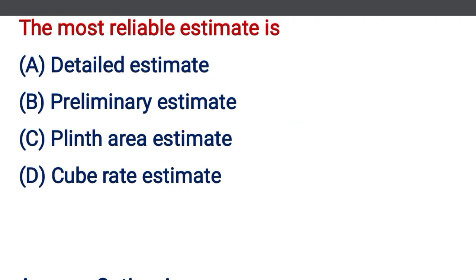The most reliable estimate is — option A: detailed estimate, option B: preliminary estimate, option C: plinth area estimate, option D: cube rate estimate. The correct answer is option A, detailed estimate.